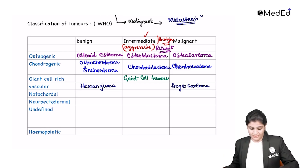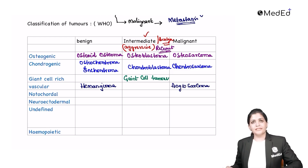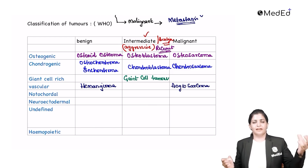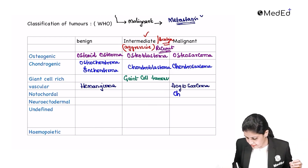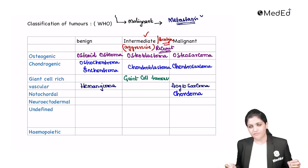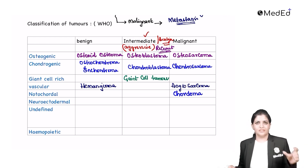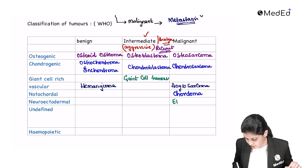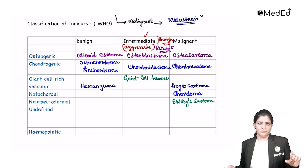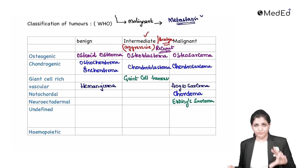Coming to the interesting notochordal variety: notochordal cells are derived during birth. The only malignant tumor derived from notochordal cells is called chordoma. Then we have neuroectodermal tumors — this interesting tumor is called Ewing's sarcoma, which is also malignant. Both notochordal and neuroectodermal tumors are present only as malignant forms.